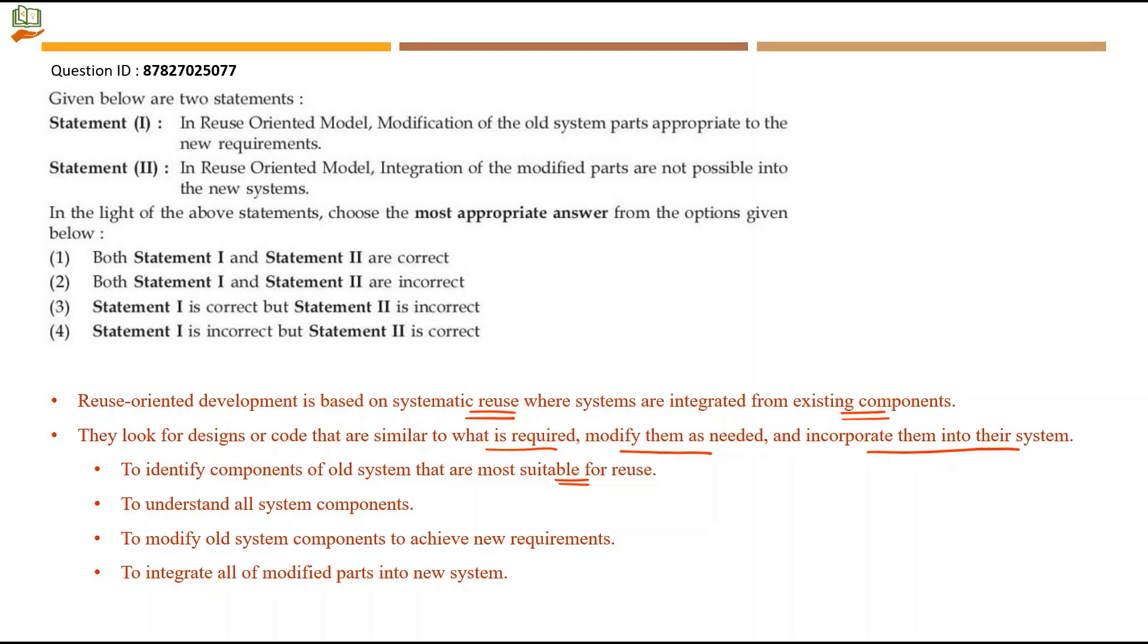So integration is a part of reuse oriented model. And the second statement is telling it is not possible to integrate, which is absolutely false. And in the first statement, modification of old system appropriate to the new requirements is what this point states - old system components are modified to achieve new requirements. So this statement is true. From this we can mark option number 3: Statement 1 is correct but Statement 2 is incorrect as the right answer. With this we are completing unit 6 questions.